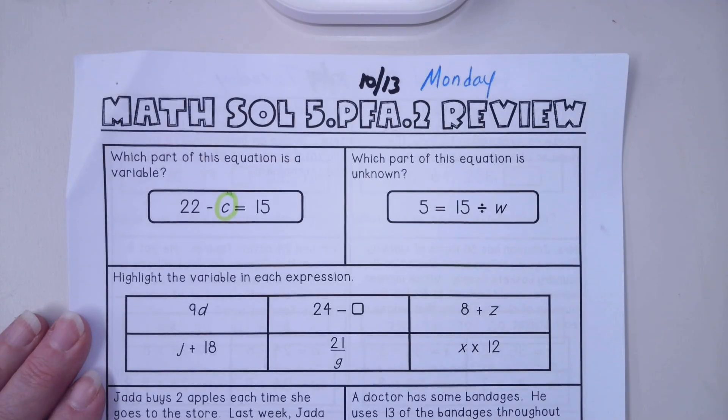We have 22 of something. We take away, give away, or lose some of them. And now we have 15.